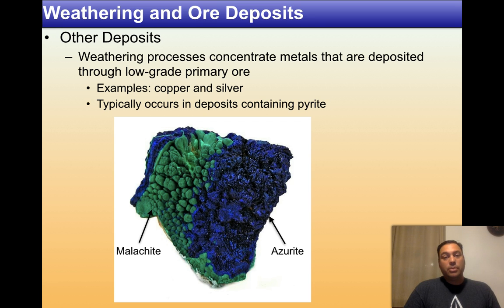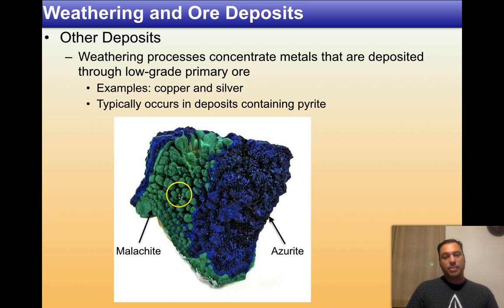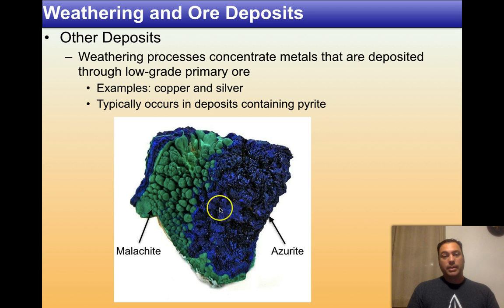Soils also produce other useful ore deposits as byproducts of weathering. Copper and silver are frequently deposited this way — typically in deposits containing pyrite where copper and silver tend to go hand in hand. Here we see copper carbonate: this is azurite and this is malachite — both copper carbonates. When copper combines with carbonate it forms these beautiful blue and green colors. This is copper ore — where most of our copper wiring comes from. Malachite and azurite are really beautiful minerals to look at under a microscope.